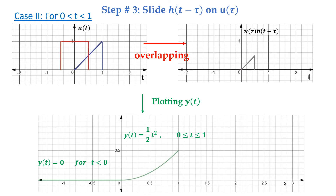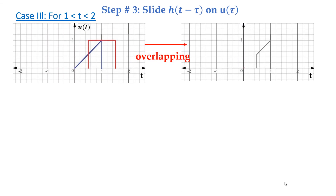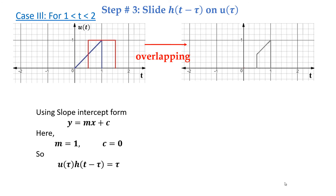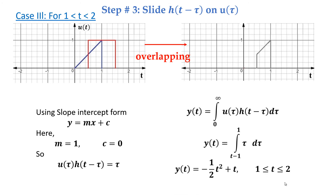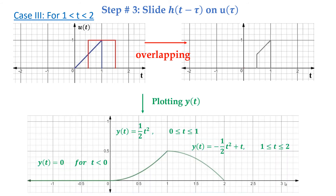This is the plot of y(t) from time 0 to 1. Case three: for time from 1 to 2, you can see the overlapped area. We can write the equation for this overlapped area using slope-intercept form. Here again the slope is 1 and intercept is 0, and the equation for the overlapped area is equal to tau. Using the convolution integral and integrating, applying the limits, we have the output y(t) = -½t² + t for time from 1 to 2.